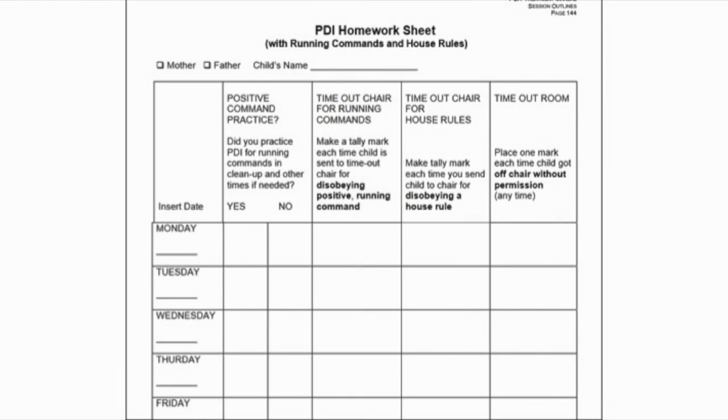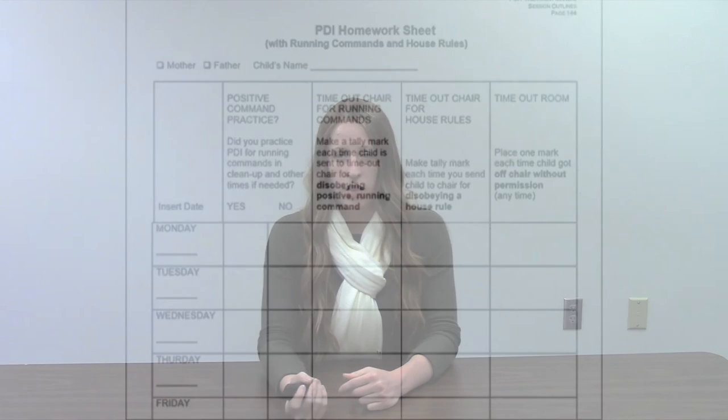You should only have about two active house rules maximum — active meaning there is still a risk they may be broken. Once established and consistently maintained, a house rule is no longer considered active. Once house rules are established, incorporate them into the PDI homework, tracking positive command practice, timeout chair for running commands, timeout chair for house rules, and the timeout room.